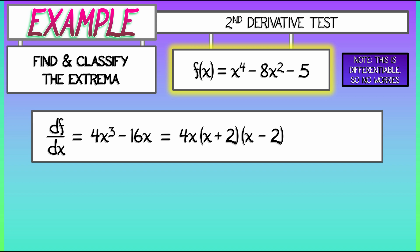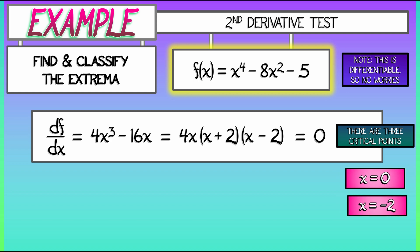Let's factor this as 4x times quantity (x+2) times quantity (x-2). Now, if we set this first derivative equal to 0, it is clear that there are exactly three critical points. And these critical points, these critical inputs are at x equals 0, x equals negative 2, and x equals positive 2.